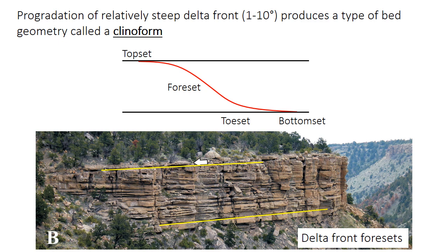The delta front, and to some extent the pro-delta, are both characterized by fairly steep gradients, especially in deltas dominated by fluvial processes. As a result, deltas have this large-scale bed geometry called a clinoform, which is a sigmoidal or S-shaped bed. It has flatter top-set beds, a steeper fore-set not unlike cross-bedding but at a much larger scale, shallowing toe-set beds, and a fairly flat bottom-set that merges parallel with the underlying layers. In the diagram, the fore-set dip is highly exaggerated — in the real world the actual dip is just a couple degrees. In the photo, yellow lines show the horizontal bedding at the top and base of the delta front, and between those lines you can see very gently dipping fore-set beds representing these delta front clinoforms.